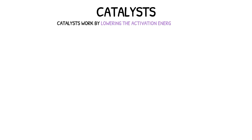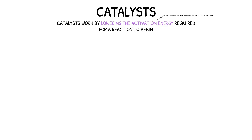A catalyst works by lowering the activation energy required for a reaction to begin. Remember, the activation energy is the minimum amount of energy required for a reaction to occur. If the activation energy is not met then the reaction cannot occur. Lowering the activation energy of a reaction means that the reaction can take place much sooner and thus the rate of reaction is much faster. In simpler terms, a catalyst provides an alternative reaction pathway that has a lower activation energy.